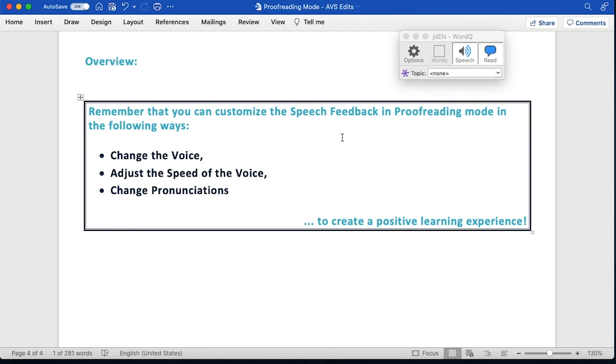So now to the overview. Remember that you can customize the speech feedback in proofreading mode in the following ways. You can go to options, select speech feedback, and then change the voice, adjust the speed of the voice, and sometimes you can even change the pronunciations of how things are pronounced. Do all of this to create a positive learning experience.